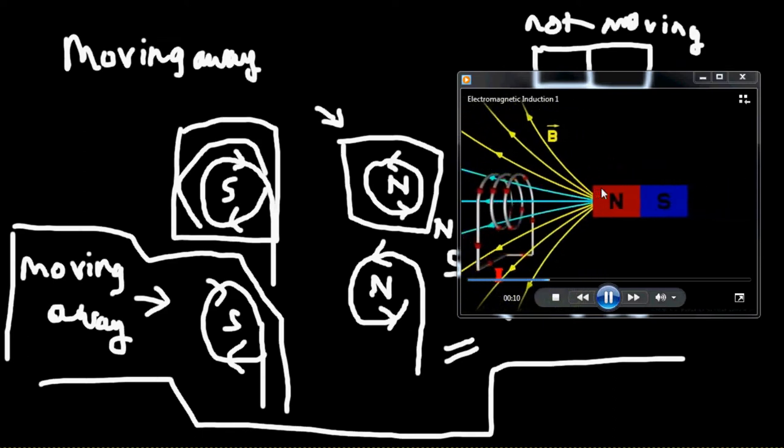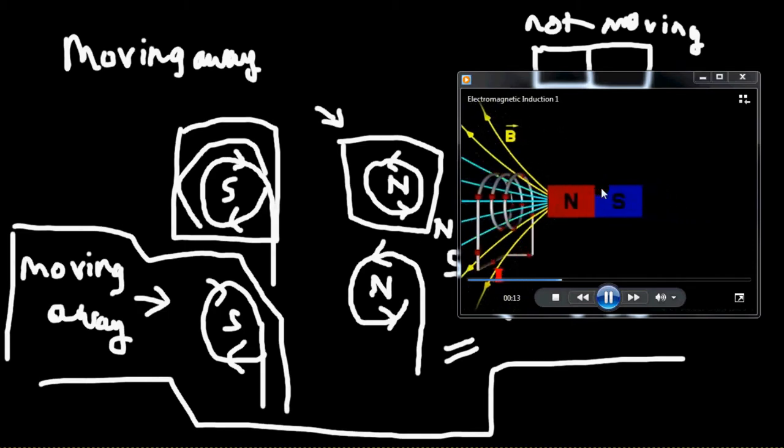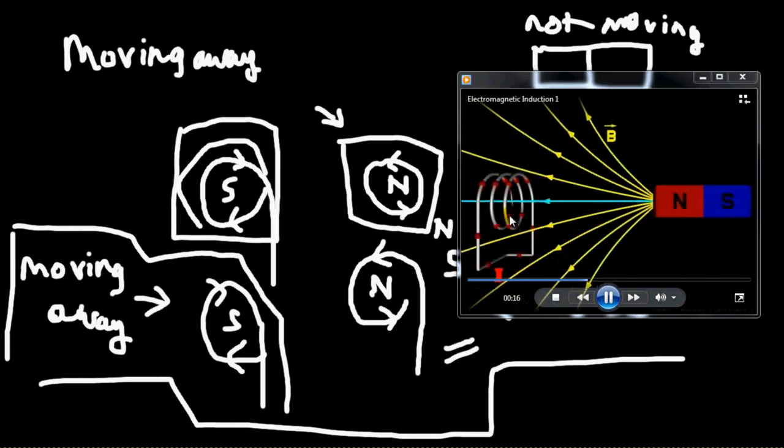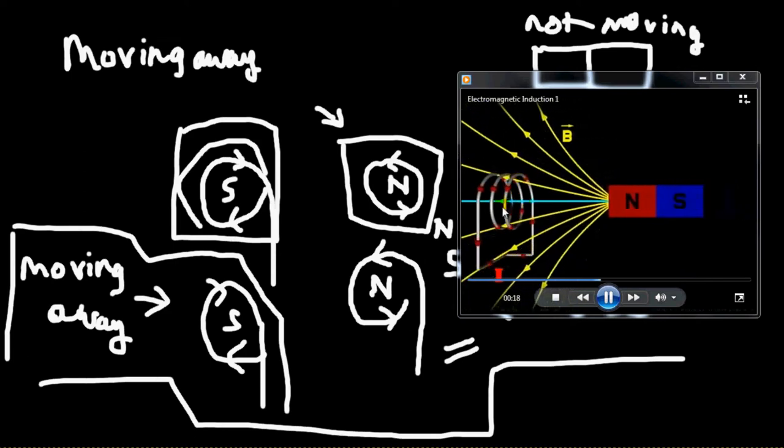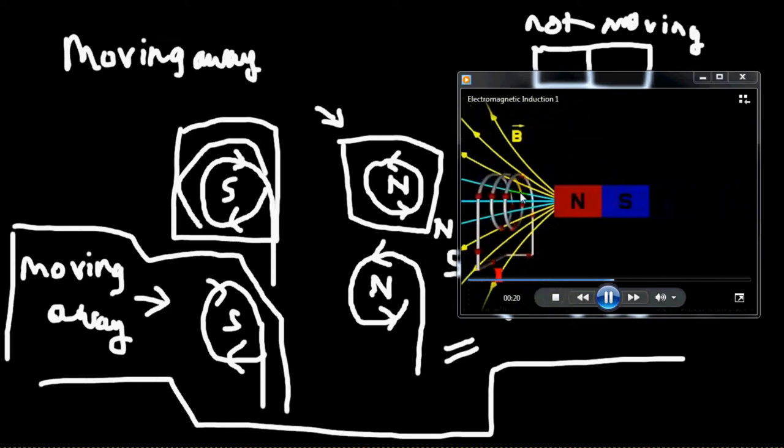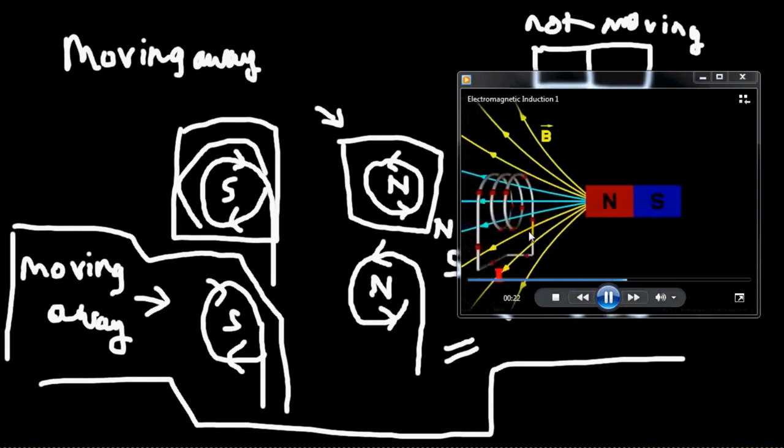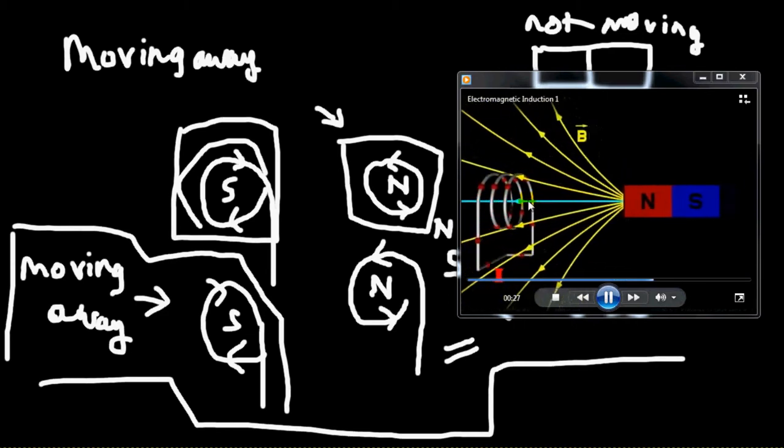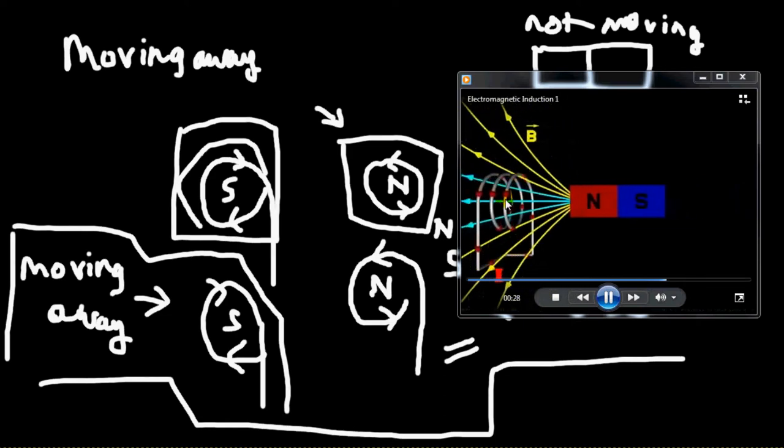Now flux is, magnetic flux is how many lines does this conductor over here, the white conductor, cut over here. So you can see in this video, the magnetic flux has been depicted in a blue color, you can see it increasing.